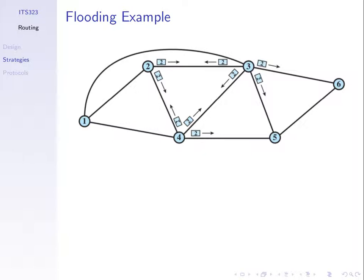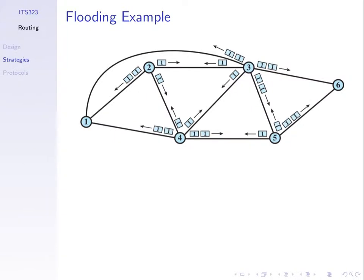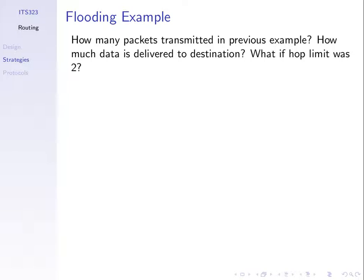Flooding in large networks is mainly used to distribute information to everyone. In those cases where we want to tell everyone something, flooding can be used. But to get from one node to one other specific node, it's very inefficient. You can try other cases, such as what if the hop limit was two.